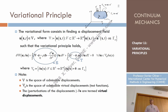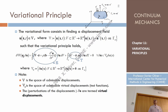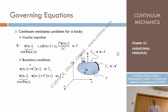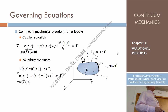The problem is that the Gâteaux derivative of a certain functional — I don't know the functional yet — must be zero for any possible admissible virtual displacement. Then the displacement is the solution of this partial differential equation system — it is the solution of the continuum mechanics problem.